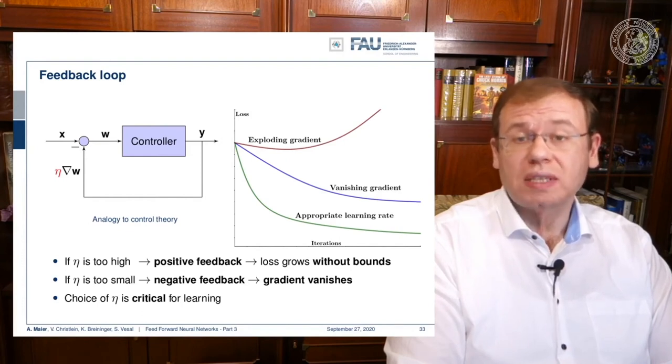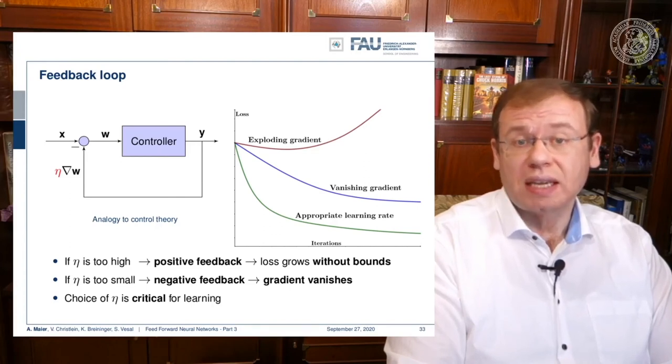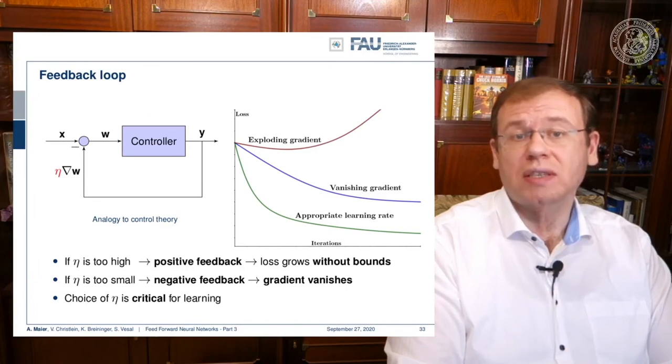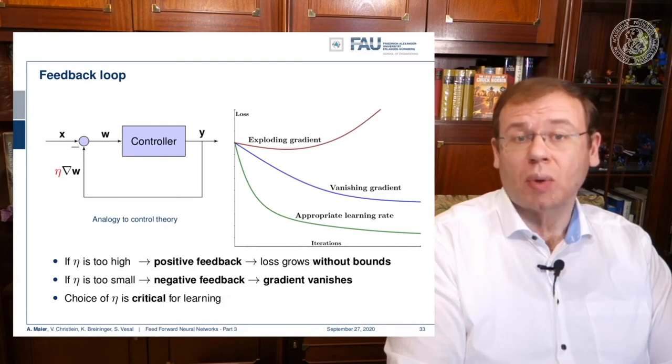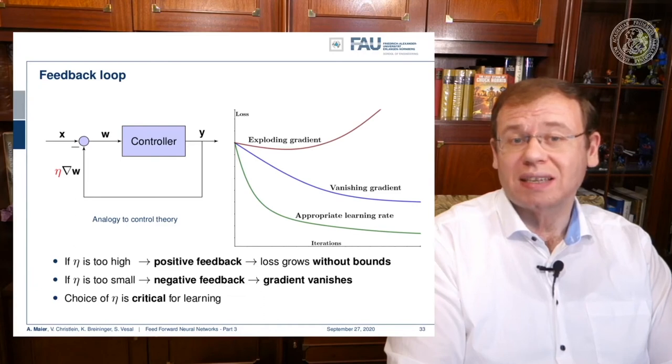Only if you choose eta appropriately will you get a good learning rate. With a good learning rate, the loss should start decreasing very quickly over many iterations, following this green curve. We should then get into some kind of convergence. When we have no changes anymore, we are essentially at the point of convergence on the training data set. We can then stop updating our weights. So we see the choice of eta is critical for our learning, and only if you set it appropriately will you get a good training process.